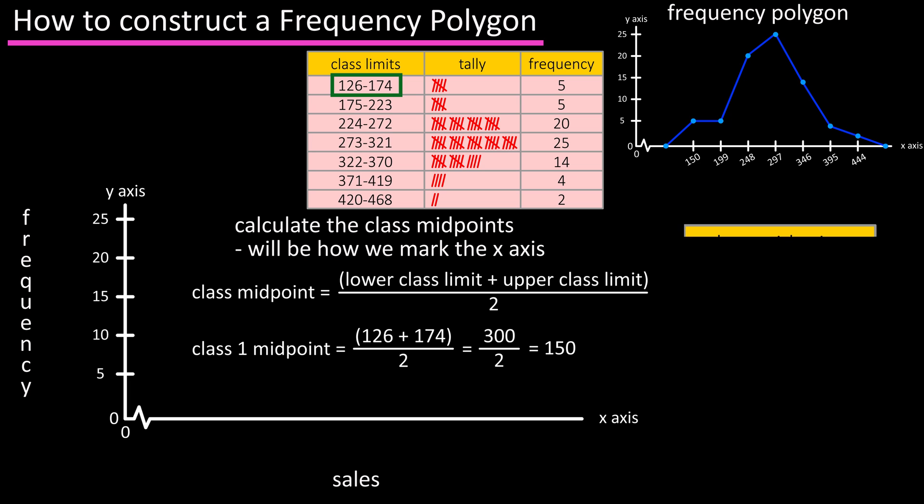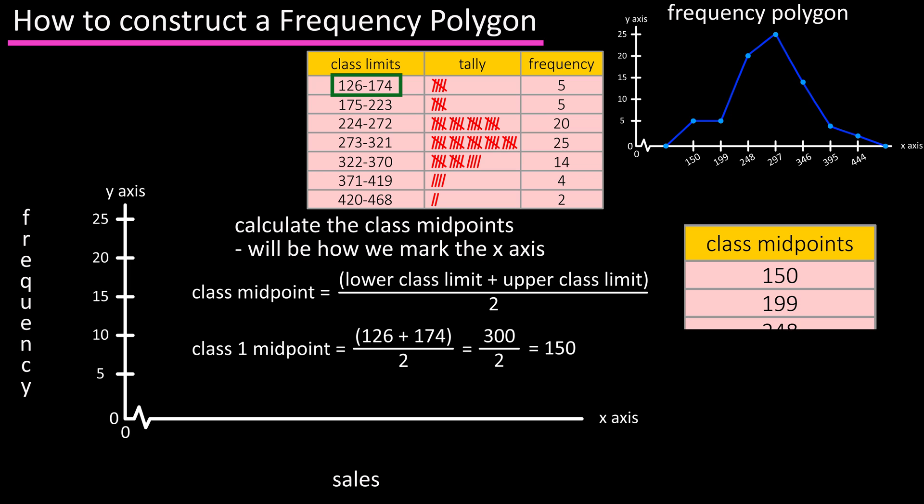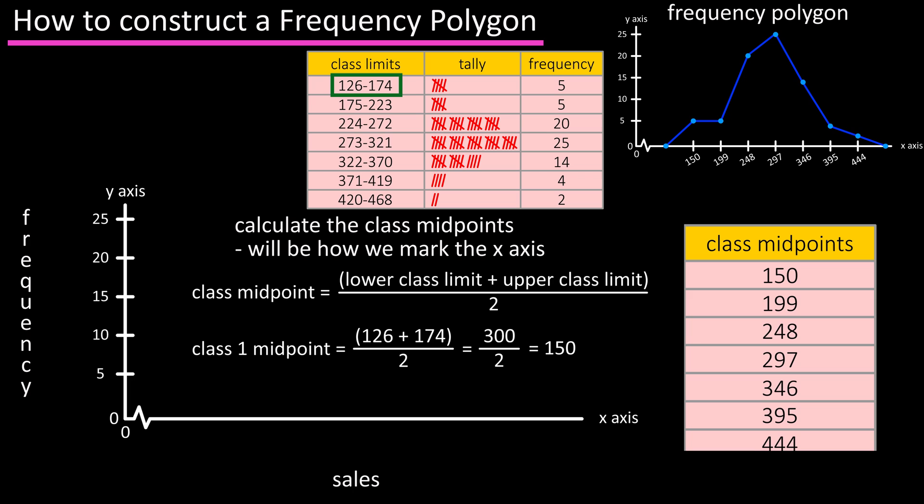Continuing this process for the remaining six classes, we get 199, 248, 297, 346, 395, and 444, and you can see the results in this table.